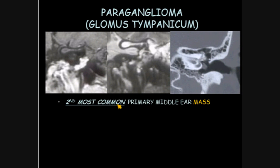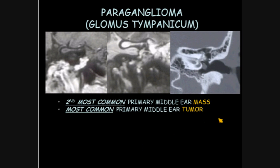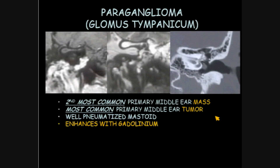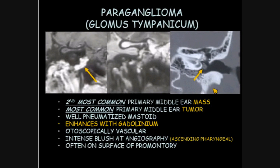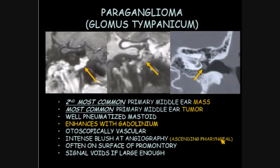Paragangliomas, or glomus tympanicum tumors, are the second most common primary middle ear mass and the most common primary middle ear tumor. These also have well-pneumatized mastoid due to a lack of history of chronic otitis. They enhance with gadolinium. They're otoscopically vascular, of course. There's an intense blush on angiography — they're usually supplied by the ascending pharyngeal. They're often located on the surface of the promontory, but not always. And they have signal voids if they're large enough.